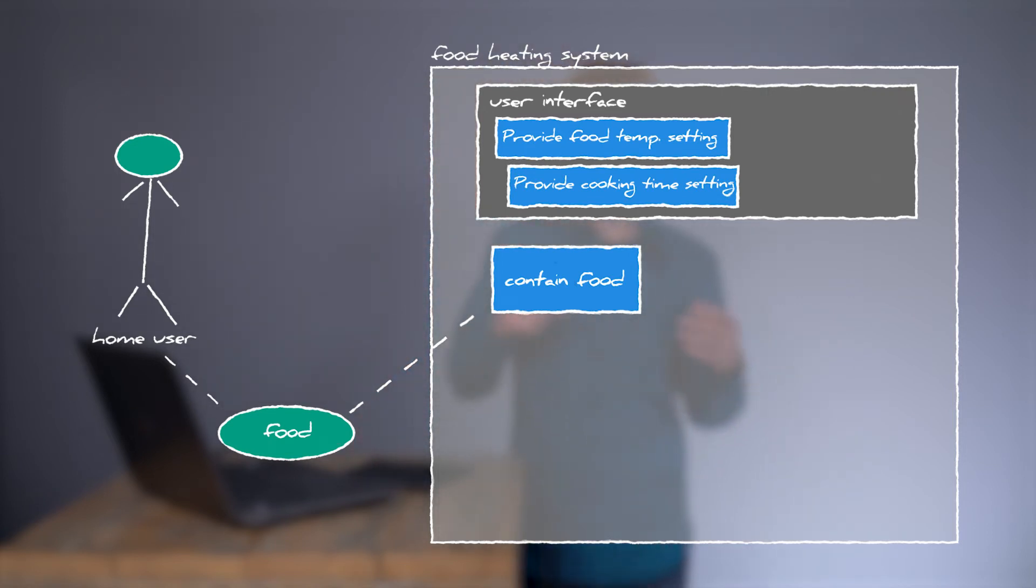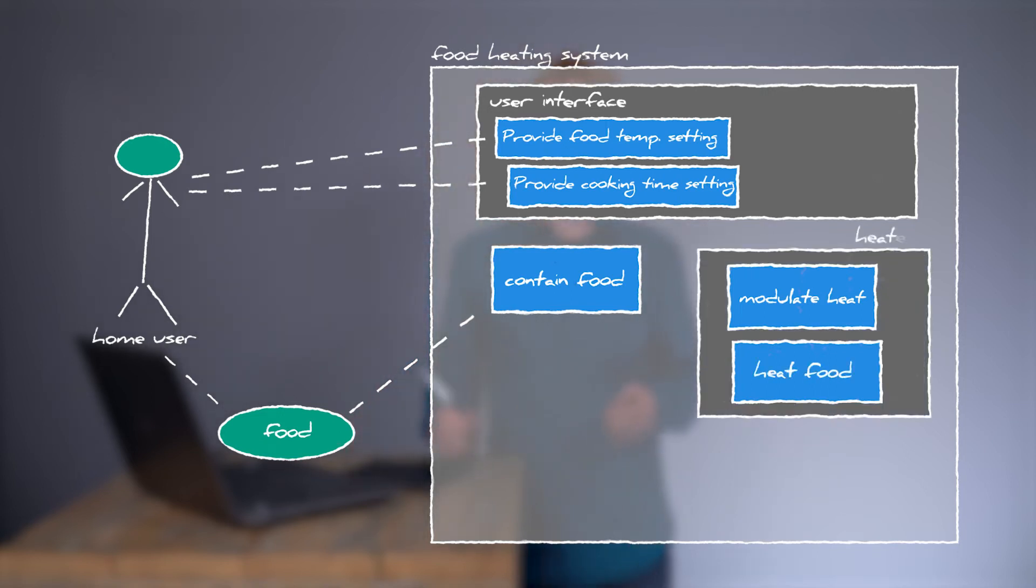The cool part of this is that I can now use this new part user interface as a system name in my EARS requirements. When the home user changes the cooking time the user interface shall indicate the updated remaining cooking time. Again let's add some relations here. Now we can continue and add heat modulation and probably there's a part that heats the food and that can be a grill or a microwave so I will also add this as a part. And this way we continue adding parts that we are sure of and allocating functions. Ring an alarm to the user for instance.